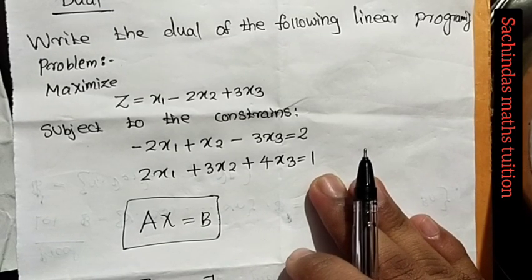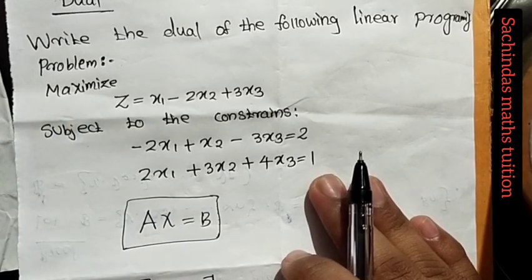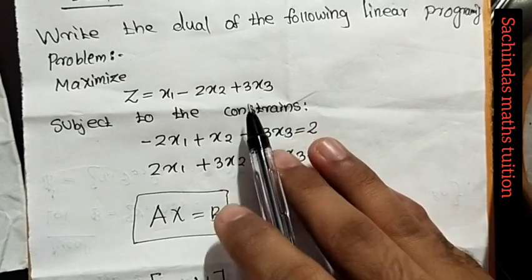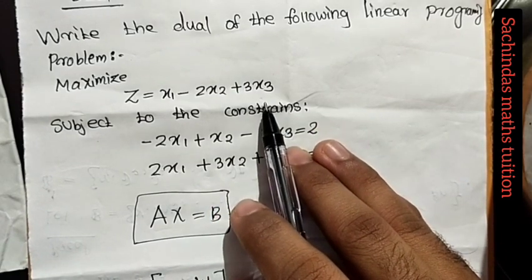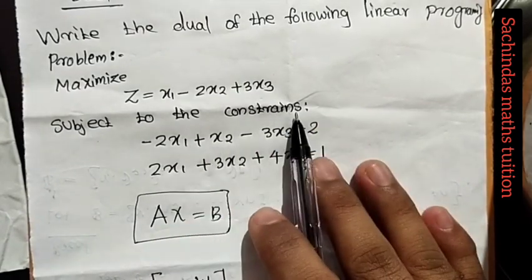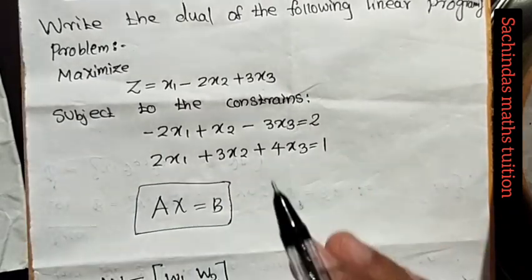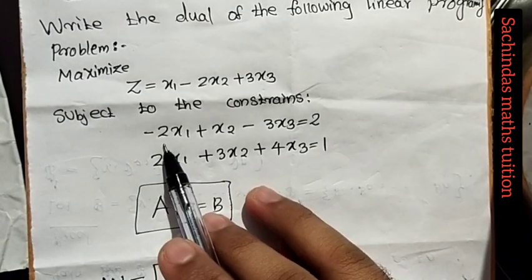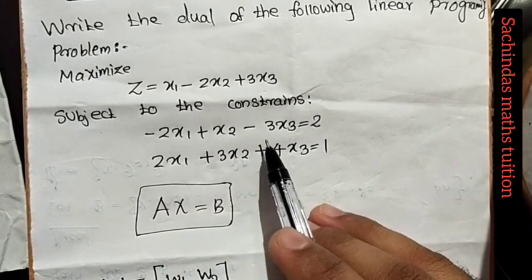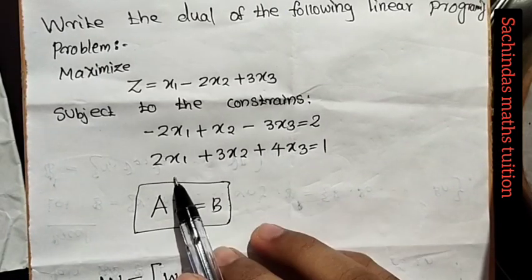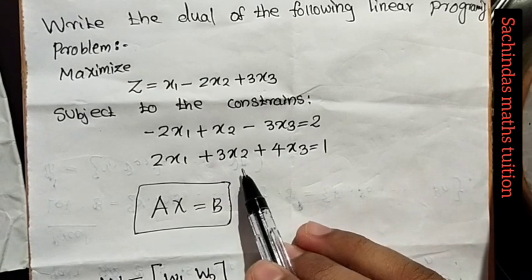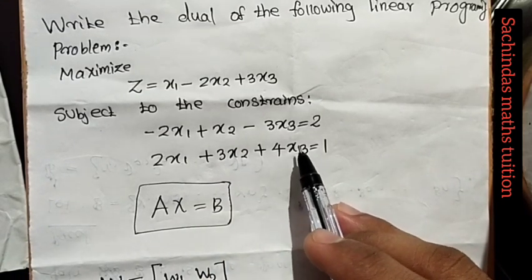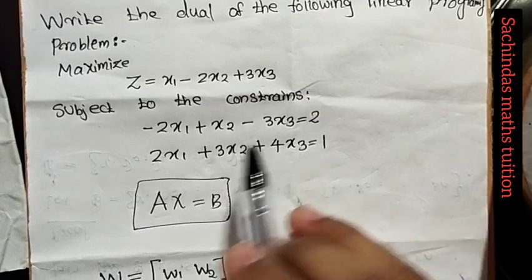We have to maximize this problem. Z is equal to x1 minus 2x2 plus 3x3. That is the objective function. The constraints are: minus 2x1 plus x2 minus 3x3 equals 2, and 2x1 plus 3x2 plus 4x3 equals 1. Those are the linear constraints.